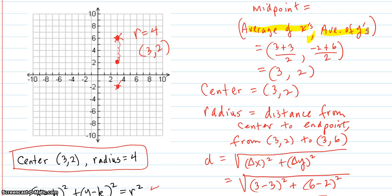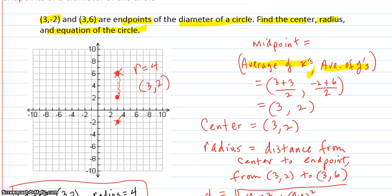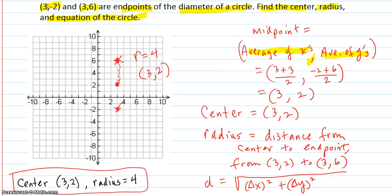So if you averaged the points there, 3 plus 3, 3 and 3 are the x's. You average those, add them up and divide by 2. And the average of the y's, -2 plus 6, divided by 2, you would get (3, 2) in this case.